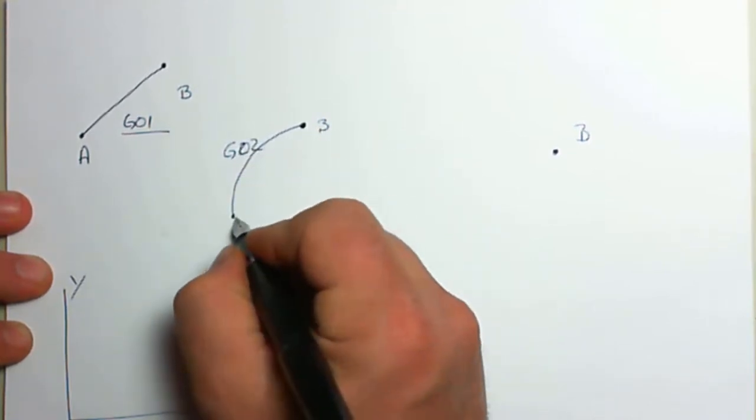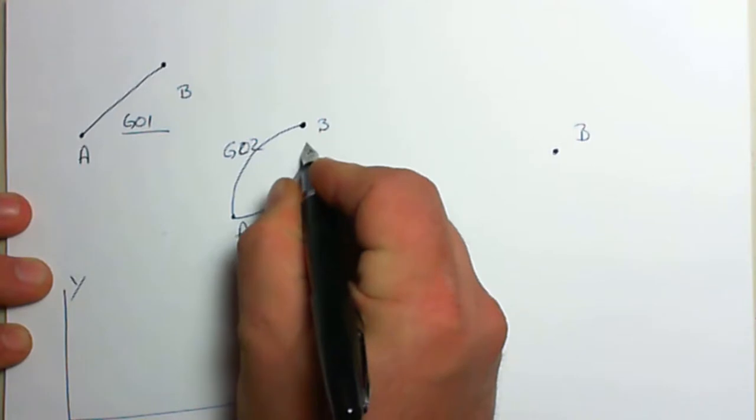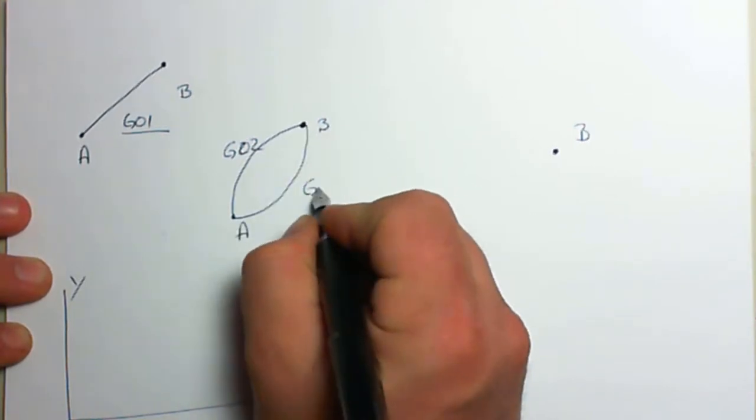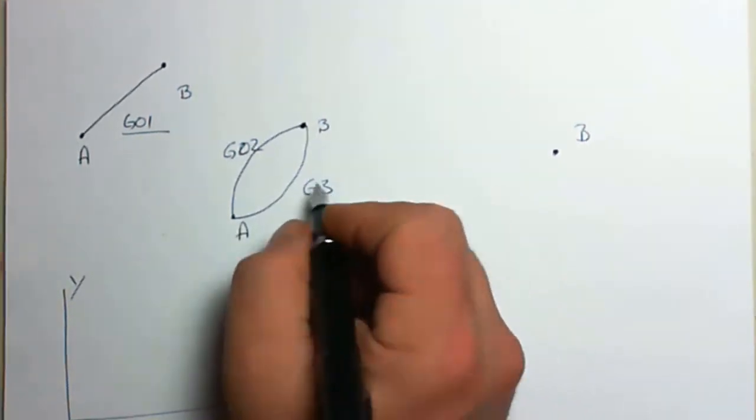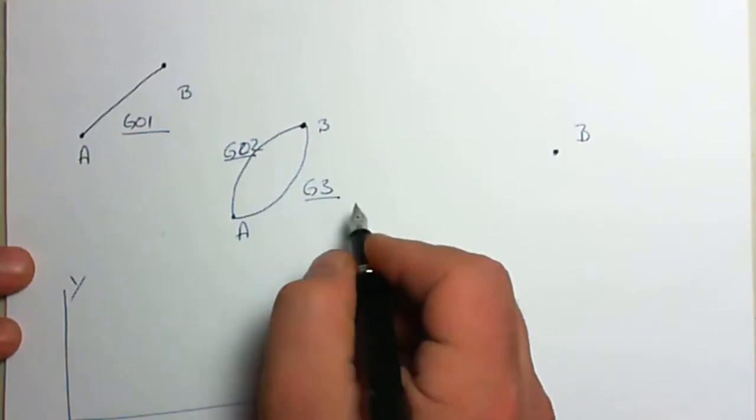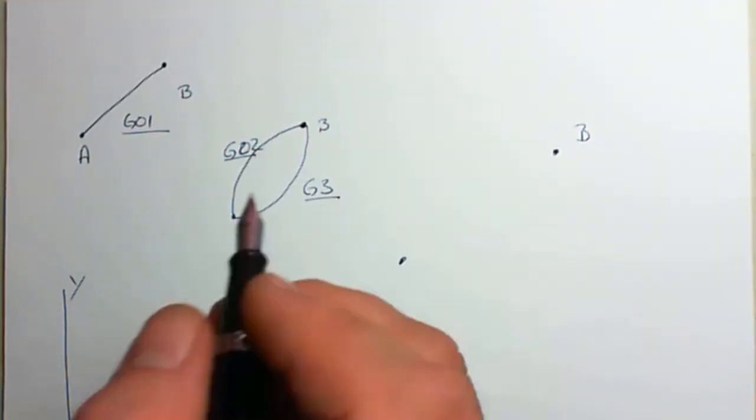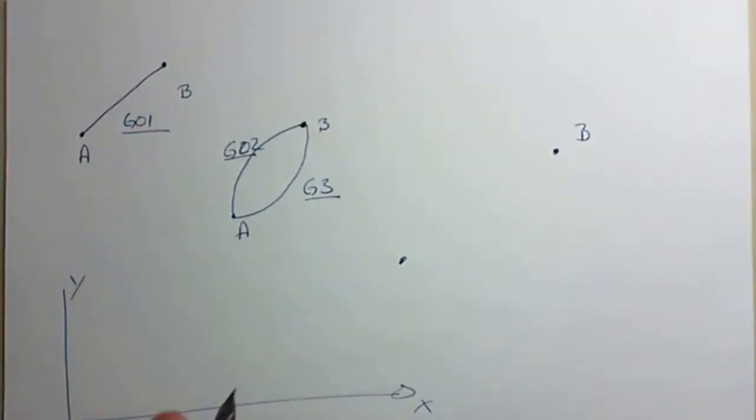And if we want a counterclockwise arc, we'll command a G03. And again, both of these moves require a feed rate and it has to be either declared on the line of code where you program this or in a previous line of code.